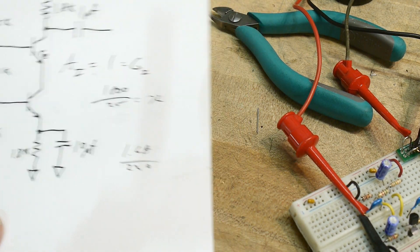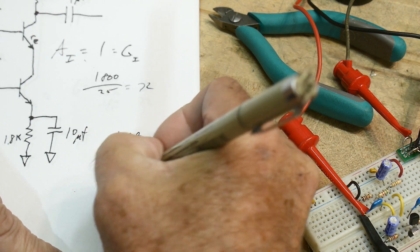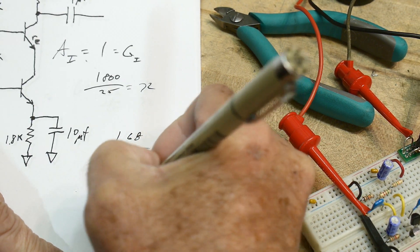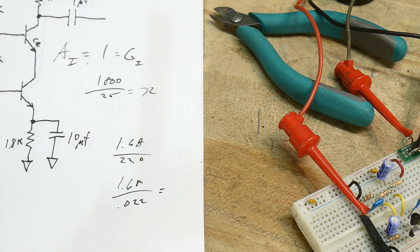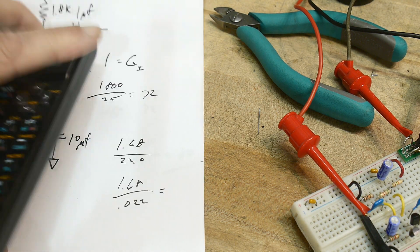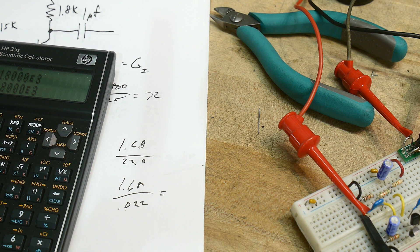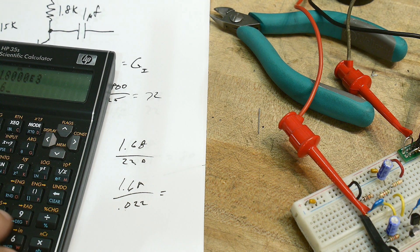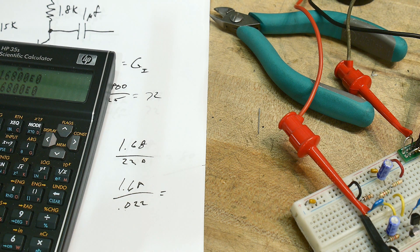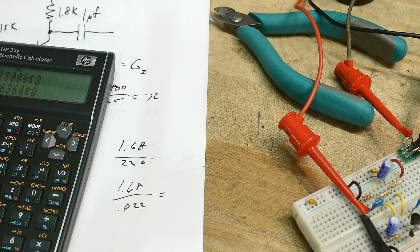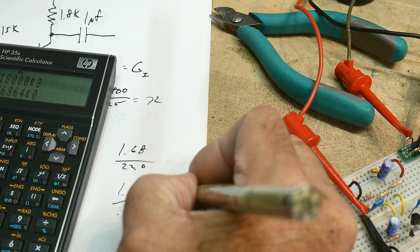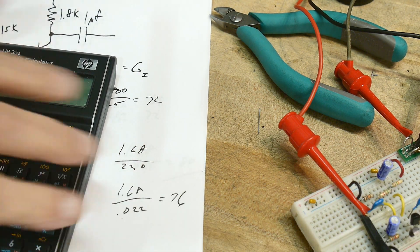Okay, so we have 1.68 divided by 0.022 is 76. So the gain here is 76.